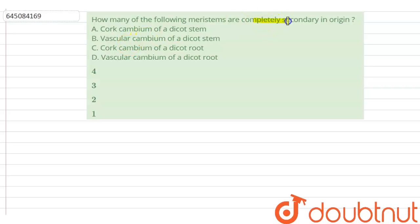How many of the following meristems are completely secondary in origin? The options are: A. Cork cambium of dicot stem, B. Vascular cambium of dicot stem, C. Cork cambium of dicot root, D. Vascular cambium of dicot root. And the answer choices are four, three, two, one.